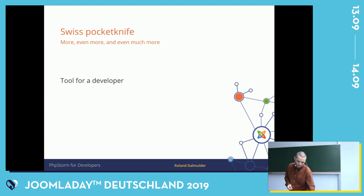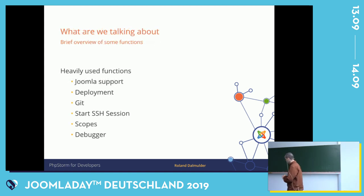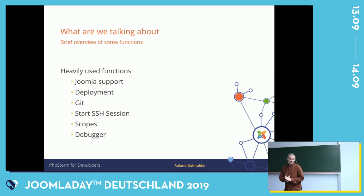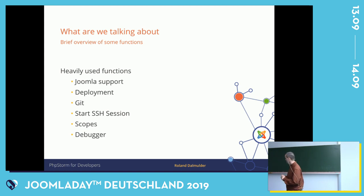PHPStorm really understands how Joomla works. It's like a Swiss pocket knife — it can do a lot of things for developers and designers alike. I think if I use maybe one or two percent of what the whole package can do, it might be a lot, but it's enough for me. The functions we're going to talk about are: Joomla support, the deployment feature, Git, SSH sessions from within PHPStorm, and XDebug.